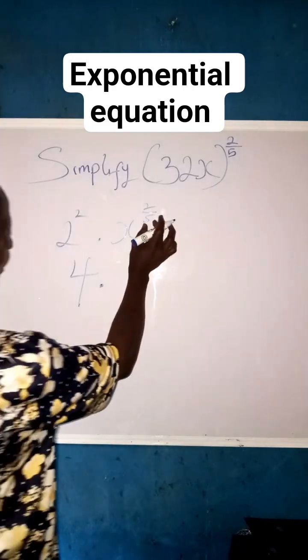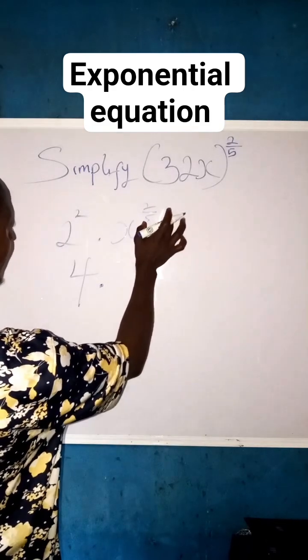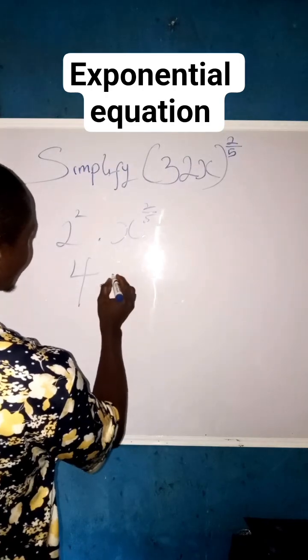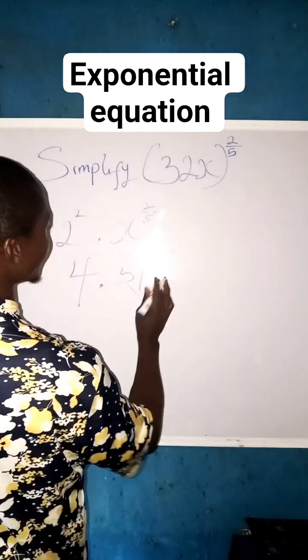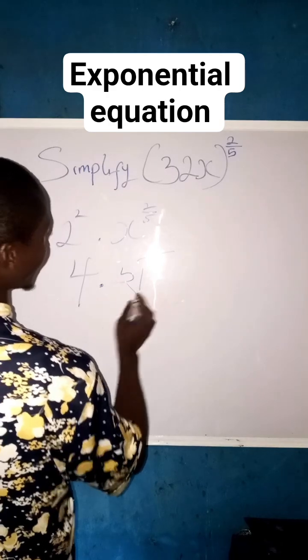Whenever something like this, we can take this, the denominator from the power to be what? To be a number, then root, fifth root, root 5.